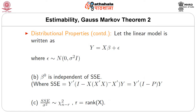Let the linear model be written as y equal to X beta plus epsilon, where epsilon follows Normal(0, sigma-squared I). Beta-naught is independent of SSE, where SSE equals y-transpose (I minus P) y, and P is the projection matrix. SSE divided by sigma-squared follows a chi-squared distribution with n minus r degrees of freedom, where r is the rank of X.